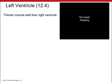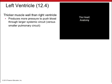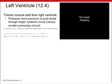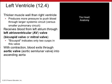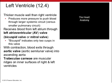The left ventricle is the strongest of all four chambers because it has to pump blood throughout the body, so it has the thickest wall and produces more pressure to push blood through the larger systemic circuit. It receives blood from the left atrium through the mitral valve, also called the bicuspid or left AV valve, which has only two flaps. With contraction, blood exits through the aortic semilunar valve into the ascending aorta. The trabeculae carnae are muscular ridges on the inner surface of the right and left ventricles.